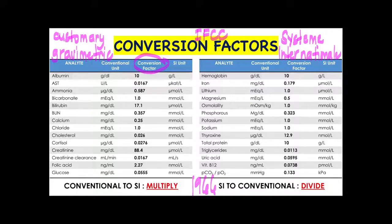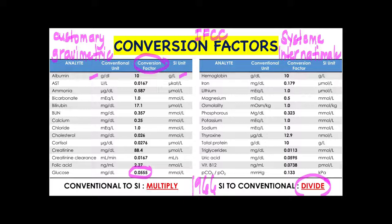As medical technologists, you are obliged to memorize the conversion factors of each analyte — not only the conversion factor, but also the conventional unit and the SI unit. For example, for glucose, the conversion factor is 0.055. If your result is in conventional units and you want it in SI units, multiply by the conversion factor. If you have an SI unit and want to convert to conventional units, divide the SI unit value.